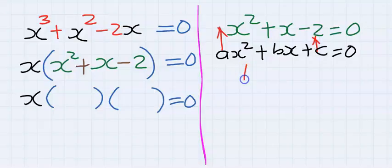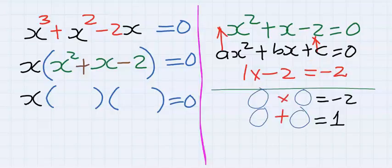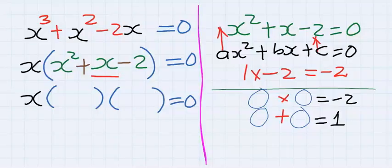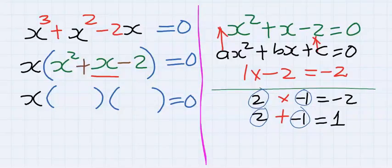Which is one multiply minus two and our answer is minus two. Next there exist two numbers when we multiply the two numbers we get minus two and when we add the two numbers we get plus one, which is a replacement for the middle quadratic term. The two numbers are two and minus one.